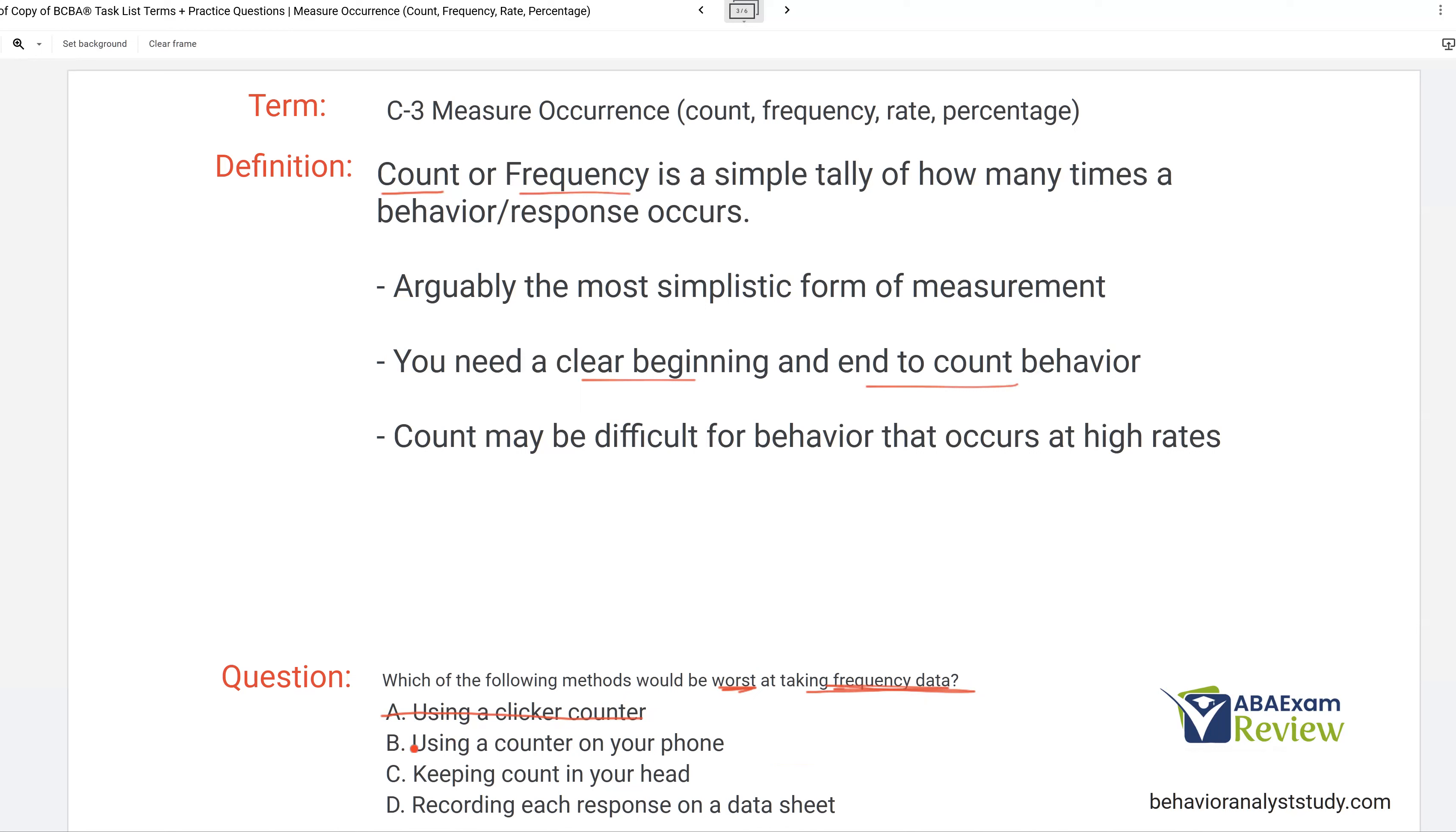B, using a counter on your phone may be more cumbersome than a clicker counter, but at least with the phone, you've got something keeping track of it for yourself. C, keeping count in your head is not a good idea. No matter how good you think you are, let's say you're counting, you get distracted, you lose count, there goes the data. So keeping count in your head is not going to be a good idea. And then D, recording each response on a data sheet. If you still use paper data sheets, if you don't have a digital form, totally fine. At least it's a permanent record of what you've counted. So the worst method of counting is going to be keeping count in your head.